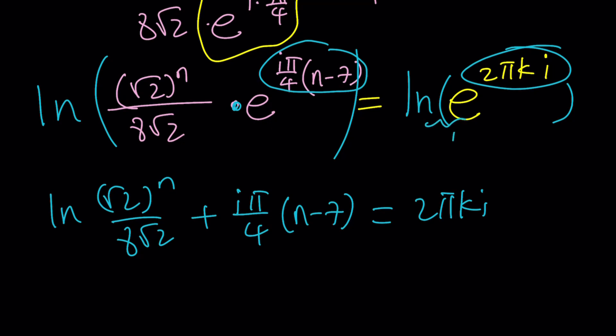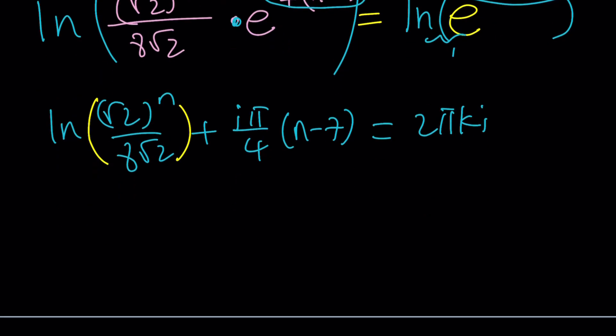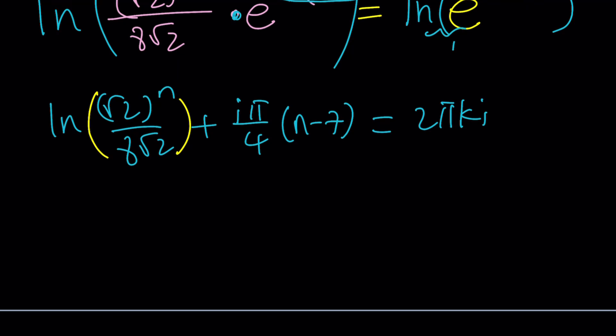Now, this is what I meant in two steps. Now we have a quotient, and that can be written as the difference of two ln's. ln(√2)^n - ln(8√2) + iπ/4 · (n-7) equals 2πki.